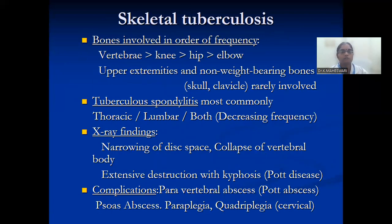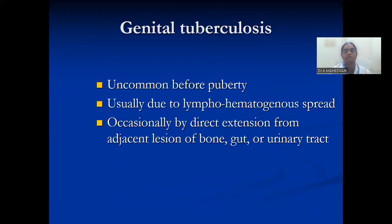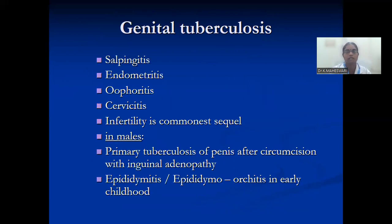Skeletal tuberculosis: the vertebra is most commonly affected, followed by the knee, hip, and elbow. Tuberculosis spondylitis shows X-ray findings like narrowing of the disc space, collapse, extensive destruction, and complications such as paravertebral abscesses. Genital tuberculosis is uncommon before puberty, usually due to lymphohematogenous spread, occasionally by direct extension from adjacent bone, gut, or urinary tract.